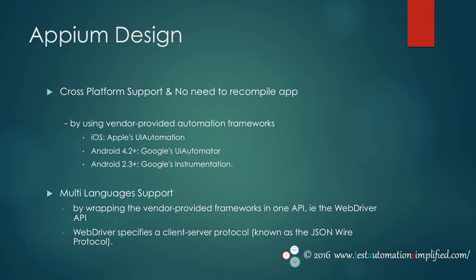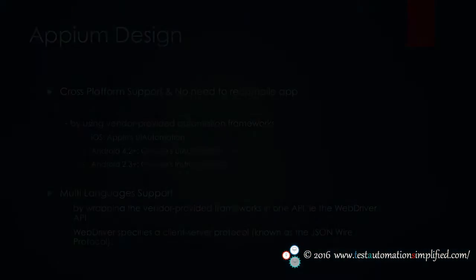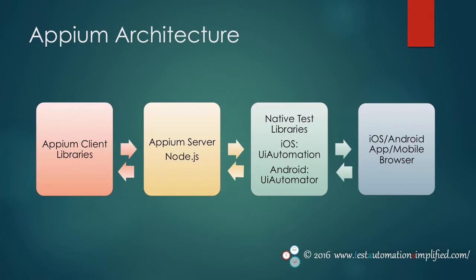WebDriver specifies a client-server protocol which is known as the JSON Wire protocol. Given this client-server architecture, a client written in any language can be used to send appropriate HTTP requests to the server. As you can see from the diagram, APM architecture has three main components: APM client libraries, APM server, and native test libraries. APM receives a connection from a client, listens for a command, executes those commands on a mobile device, and responds with an HTTP response representing the result of command execution.